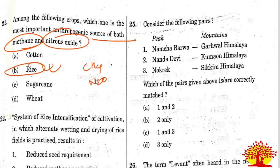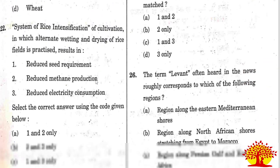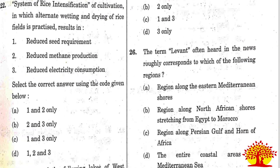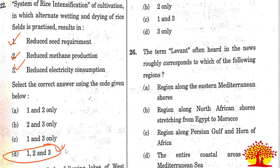Twenty-second question: the System of Rice Intensification (SRI), in which alternate wetting and drying of rice fields is practiced, results in what? All three statements are correct. Option D, statements 1, 2, and 3, is the right answer.